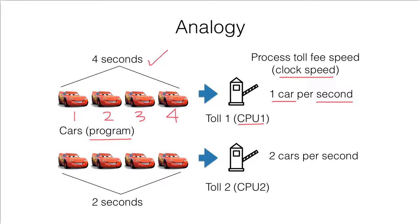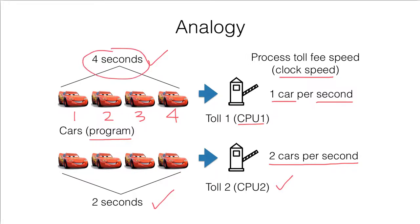So what if we increase the clock speed to two cars per second? That means we double the clock speed — this tow is more efficient and we have a more powerful tow. If we have four cars and divide by the clock speed, the total time required will be only two seconds, which is about half of the time of the original CPU.